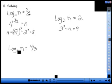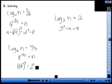Log base 8 of n equals 4 thirds. What's my exponential equation? 8 to the 4 thirds equals n. How do I evaluate that? The cube root of 8 to the 4th power. What's the cube root of 8? 2 to the 4th gives me 16. Questions?